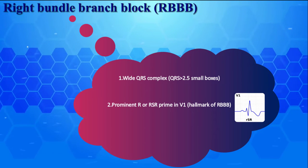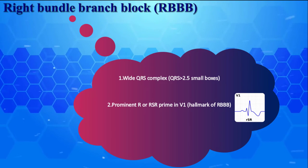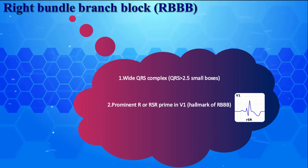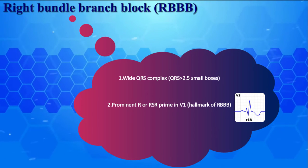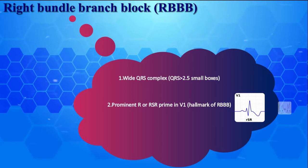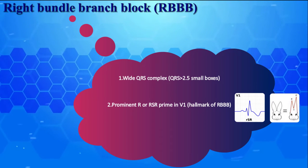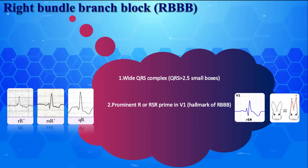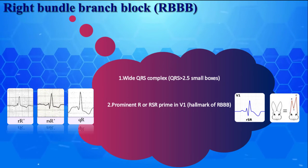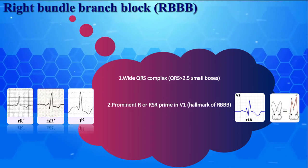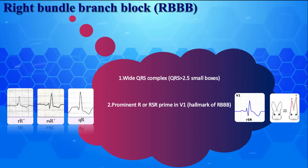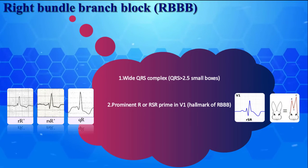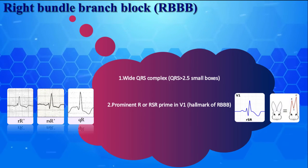Second, prominent R or RSR' in V1, which is the hallmark of RBBB on surface electrocardiogram. It is also known as the rabbit ear pattern. Here are various RBBB morphologies in lead V1. As you can see, RR', RSR', and QR are three possible patterns of RBBB in lead V1.